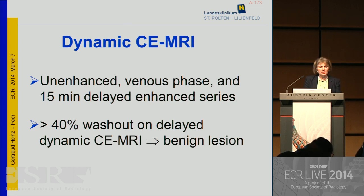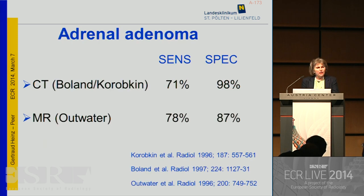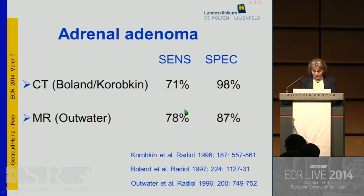What about dynamic contrast-enhanced MRI? It works similarly to contrast-enhanced CT. We also perform a 15-minute delayed series, and if the washout is above 40%, it clearly indicates a benign lesion. Comparing contrast-enhanced CT and contrast-enhanced MRI, the sensitivity and specificity are comparable and equal. However, it's still not 100%, as nothing probably is in radiology.